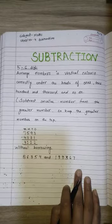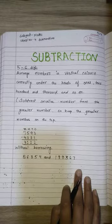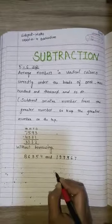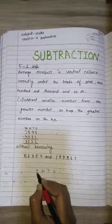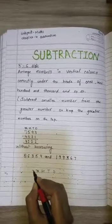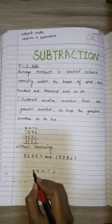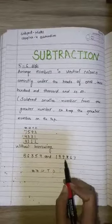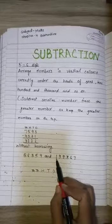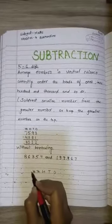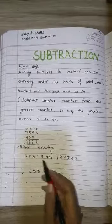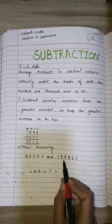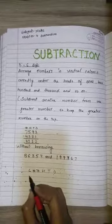We have to arrange numbers under the place value heads: ones, tens, hundreds, thousands, ten thousands, and lakh. The bigger number is placed on top. Here we have the numbers arranged accordingly — the greater number goes first.